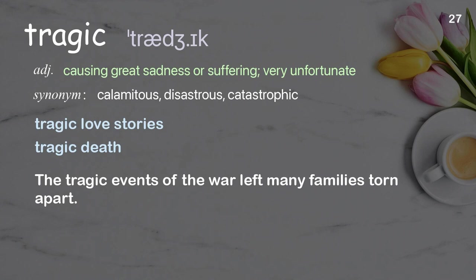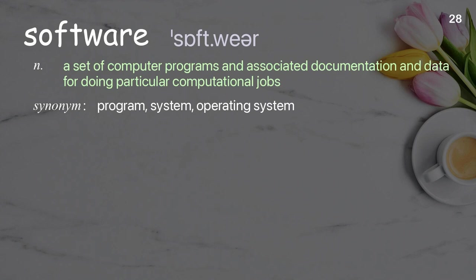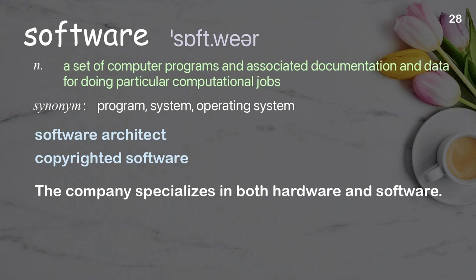Software: a set of computer programs and associated documentation and data for doing particular computational jobs. Examples: software architect, copyrighted software. The company specializes in both hardware and software.